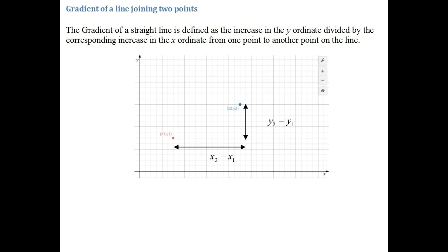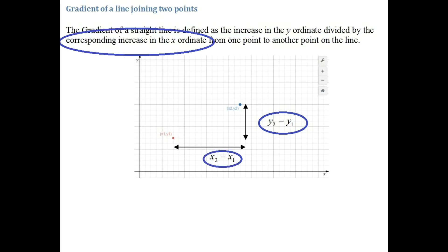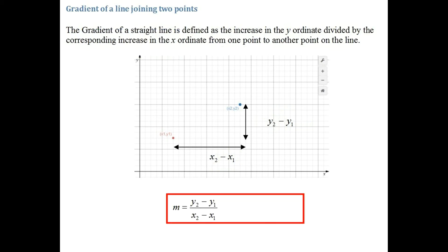If I have two points having coordinates x1, y1 and x2, y2, to work out the gradient — and it's sometimes referred to as the slope — it's the increase in the y-ordinates, so y2 minus y1, divided by the corresponding increase in the x-ordinates, x2 minus x1. This brings us to the formula. We usually use m to denote gradient, so the gradient m is given by: m = (y2 − y1) / (x2 − x1).